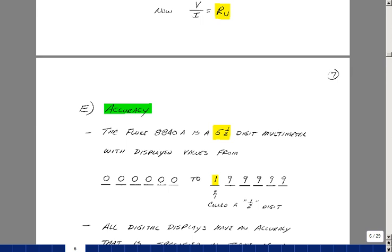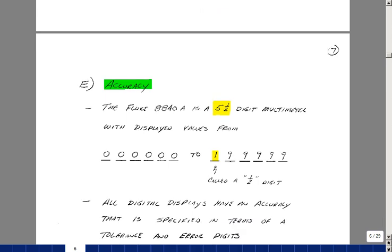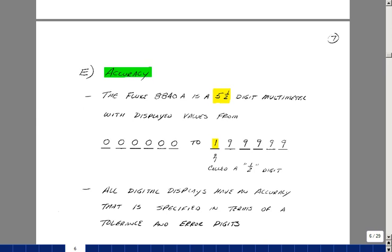Our Fluke Digital multimeter has five, actually six places that are displayed. One is called a half digit because it isn't able to go through the full range of numbers that are available.